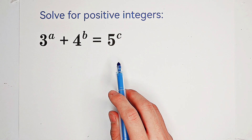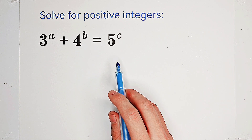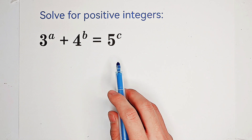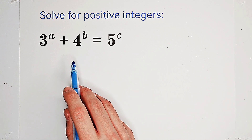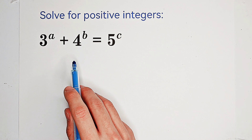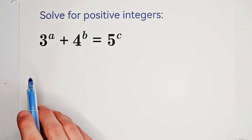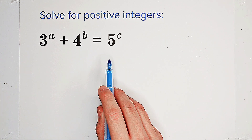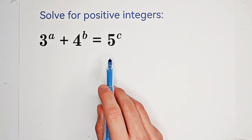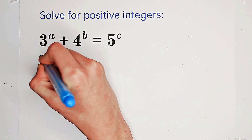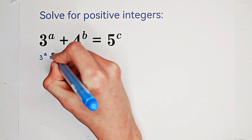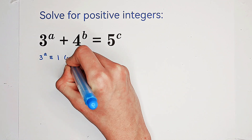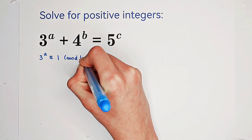What shall we do firstly? We look at the residues mod 4. Because 4 is equivalent to 0 mod 4, so 4 to the power of b is also equivalent to 0 mod 4. And 5 is equivalent to 1 mod 4, so 5 to the power of c as well.